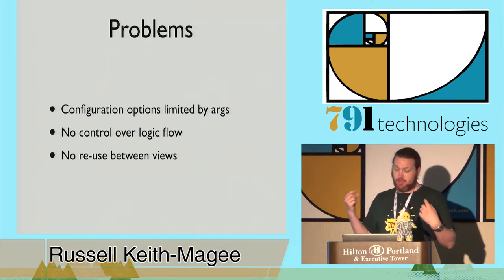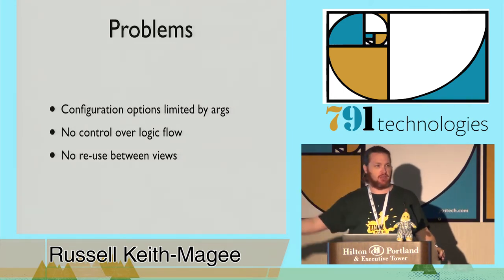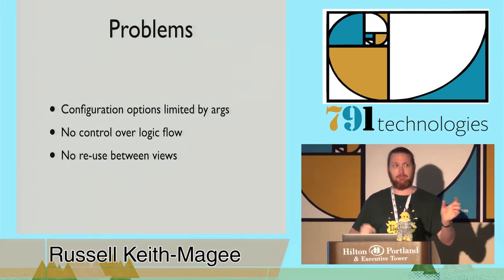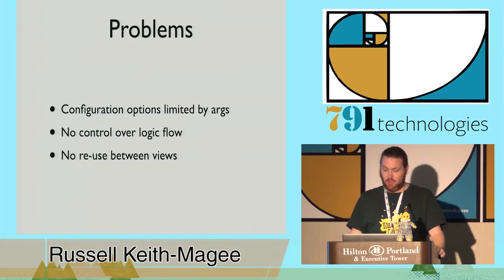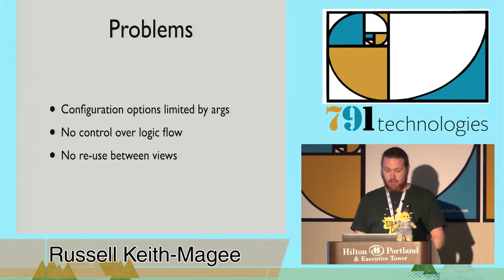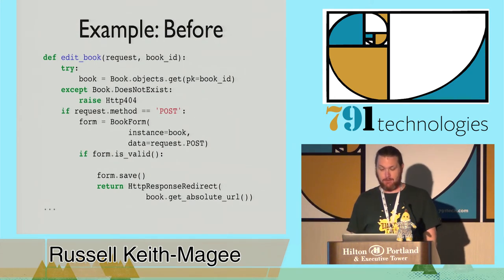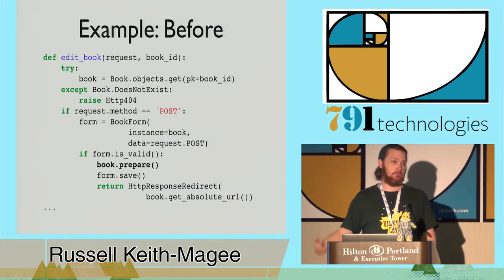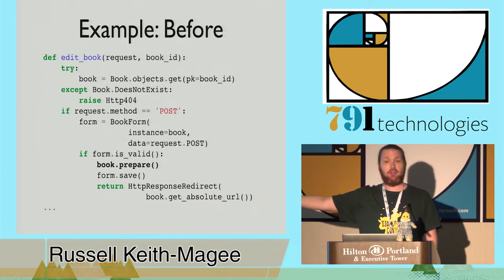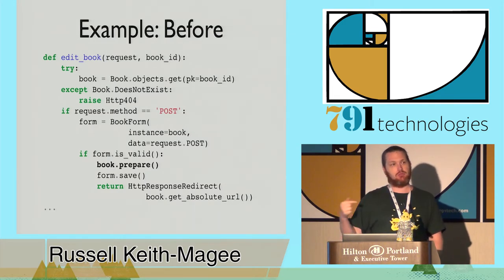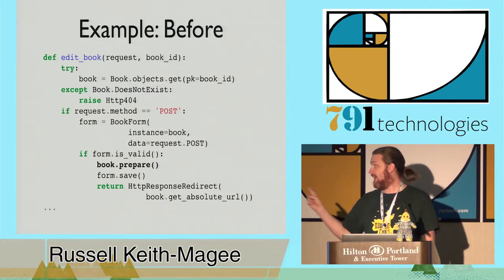How do we address these problems? You can keep adding new configuration arguments, or make those arguments callable - passing in a function to operate at a particular part of the function. But at some point, what you end up doing is poorly implementing half the features of class inheritance. Going back to our edit book example: it's trivial to say 'if the form is valid, before we save, do something' - like prepare the book before saving. Trivial to do if you've got access to the full view. Almost impossible to do cleanly with the generic function-based views that were in Django as of 1.3.